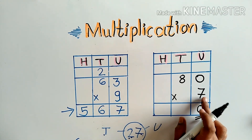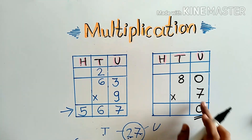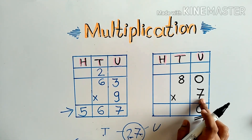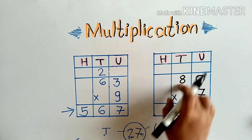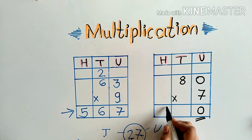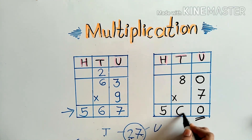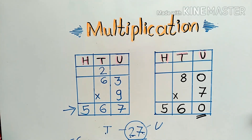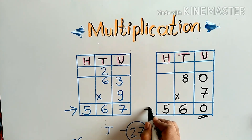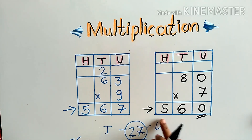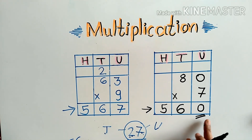Now we will multiply 7 by the tens digit. 7 eights are 56. So our answer is 560.